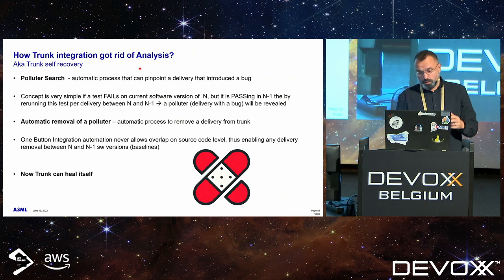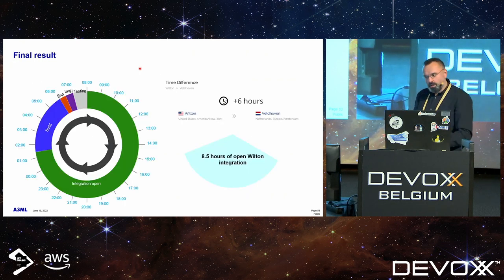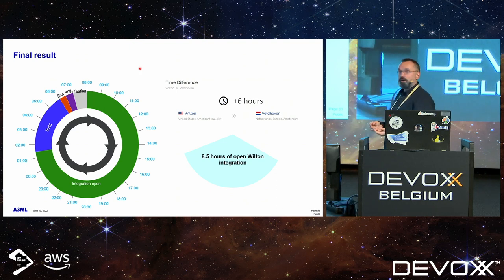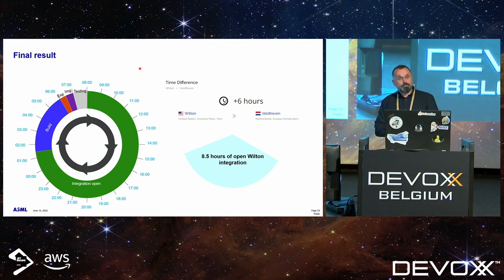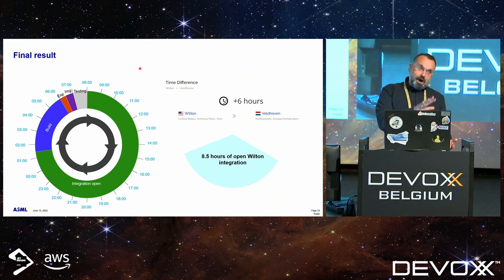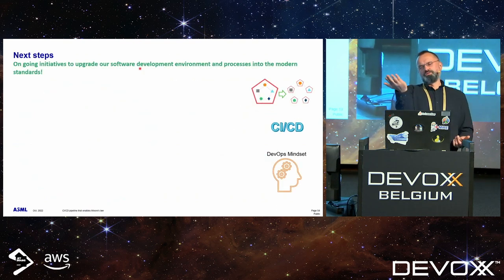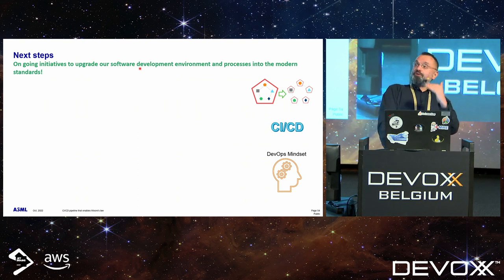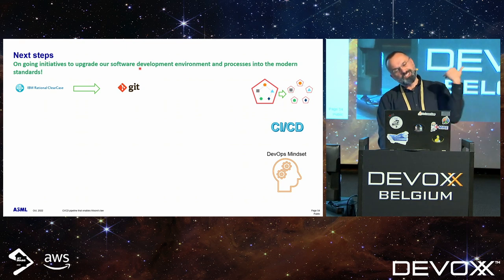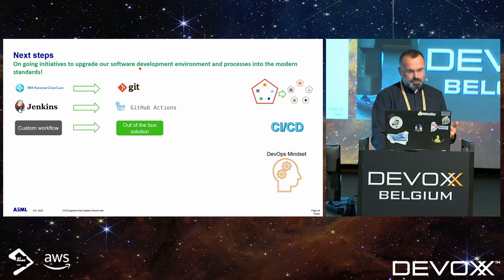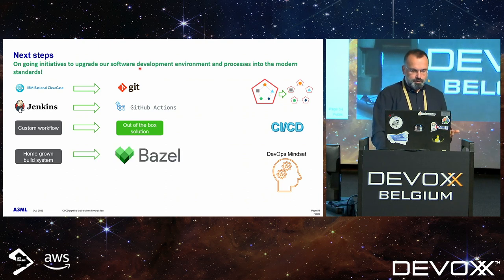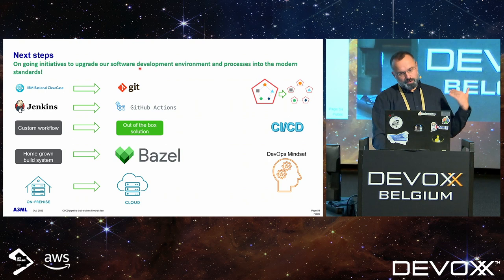Combining it all brought us to this: we were able to extend the integration window to also cover our colleagues in Wilton, United States, where we also have a big development site. And we're going to upgrade the tools too: instead of Rational ClearCase, we're thinking about going to Git, because a lot of developers don't know ClearCase anymore. And then Jenkins to GitHub Actions. That's what we're trying to do — innovating and going forward as we're supposed to.